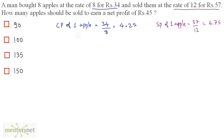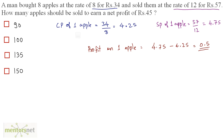Now we have the selling price of 1 apple and the cost price of 1 apple. We can find out the profit earned on a single apple. Profit on 1 apple equals selling price minus cost price, so 4.75 minus 4.25, which is 0.5. So this person earns 0.5 rupees on each apple.